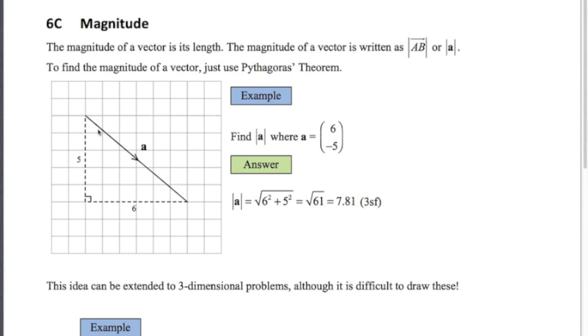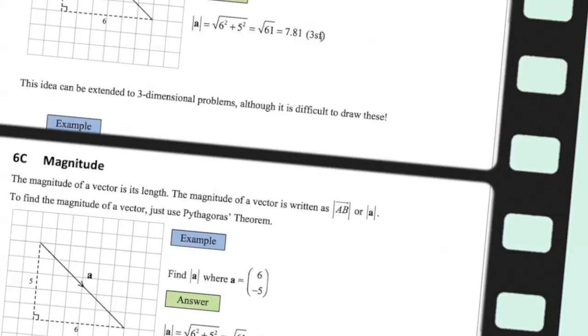So the length using Pythagoras' theorem is a squared is 6 squared plus 5 squared. Notice we don't have to worry about the negative sign. So just 6 squared plus 5 squared. So root 61 or 7.81 units long to 3 sig figs.